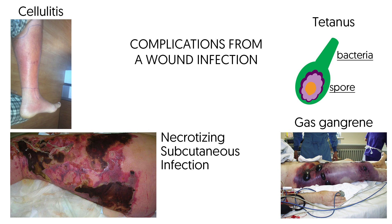Gas gangrene is a type of wet or infected gangrene caused by the bacteria Clostridium, which produces gas within tissues. It spreads to healthy tissue quickly and can cause necrosis, sepsis, toxemia, and shock.